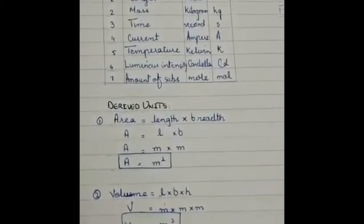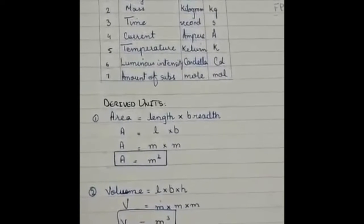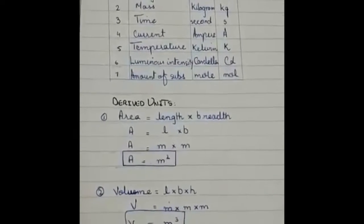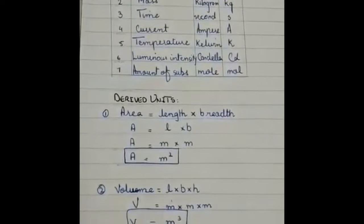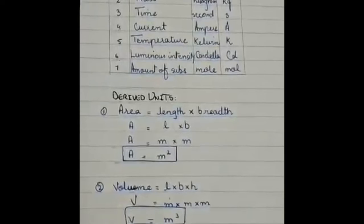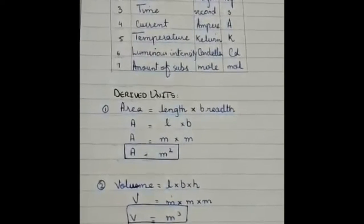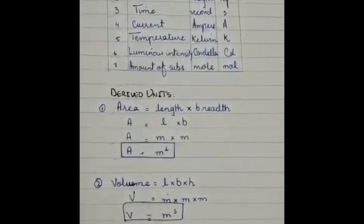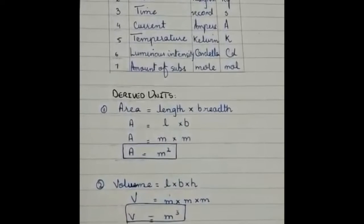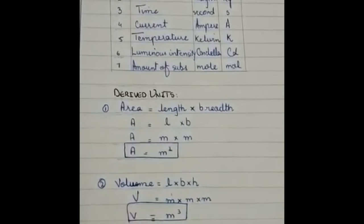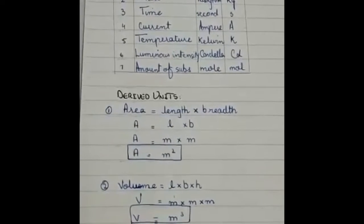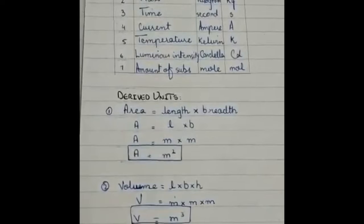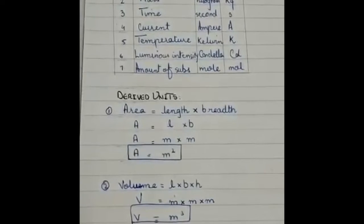There are seven basic SI units for things such as length, mass, time, electric current, temperature, luminous intensity and amount of substance. And all these seven physical quantities have seven basic SI units and their symbols are also mentioned here.